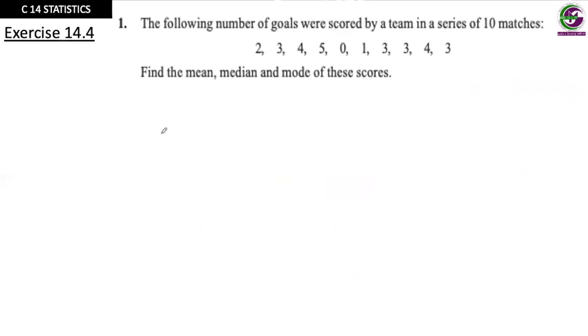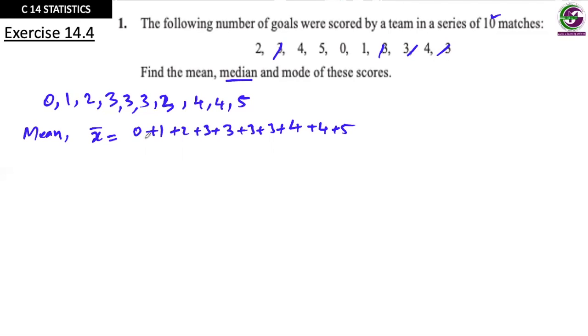Let us see the examples. The following number of goals were scored by a team in a series of 10 matches. Find mean, median and mode. Whenever we have to find median, the first step is to arrange the data in ascending order: 0, 1, 2, 3, 3, 3 repeated 4 times, then 4, 4, 5. Count to make sure we have all values, 1 through 10. Now to find mean, X bar equals 0 plus 1 plus 2 plus 3 plus 4 plus 4 plus 4 plus 5 divided by 10 values. When you add all these numbers, you get 28 divided by 10. So mean is 2.8.